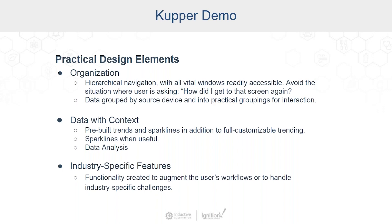We try to avoid the situation where the user asks, 'What did I click to get here?' or 'Where is this data coming from?' For organization, we often apply a hierarchy to the window navigation with no more than two layers, and we want to keep that accessible at all times.